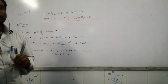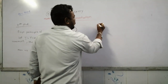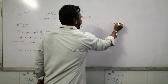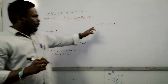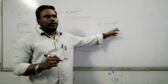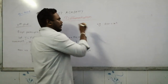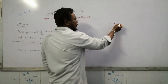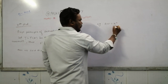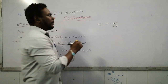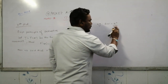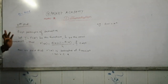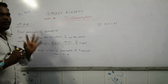Now, see an example. Suppose f(x) is x squared. We know that by general formula, the derivative of x squared is 2x. But now, we are going to calculate this by the first principle — by the definition of the first principle of derivative.